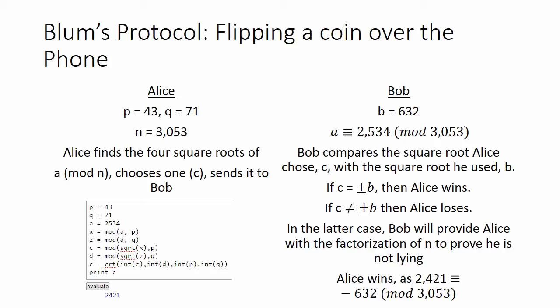If Alice's chosen square root is congruent to plus or minus b modulo n, then Alice wins as she does in our case, as a is congruent to negative b mod 3,053.